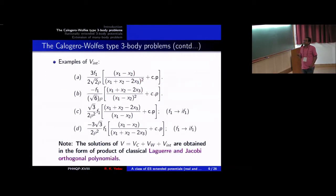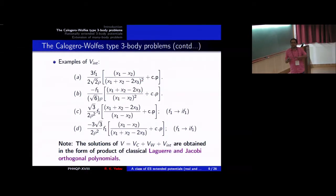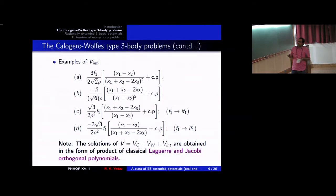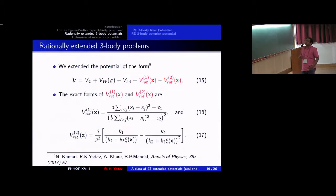One interesting result is that the solutions for all these interaction terms, when added to the normal Calogero three-body problem, are obtained in terms of either Laguerre or Jacobi orthogonal polynomials.